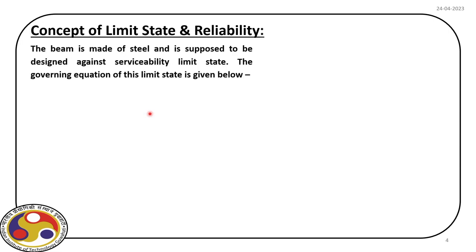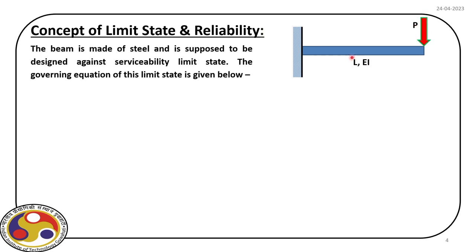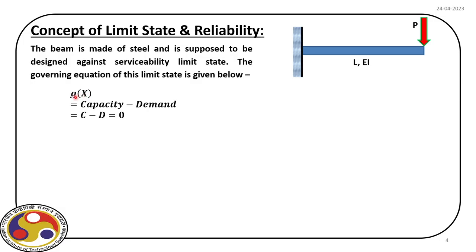Let us consider a steel cantilever beam, as you can see on your screen, which experiences a point load at the free end. The beam is defined by its geometry, that is its length. If we design at every section and consider the deformation at the free end, we have some allowable limits for that, and that is the capacity. So as long as the response of the structure is well within the capacity, the structure is safe.